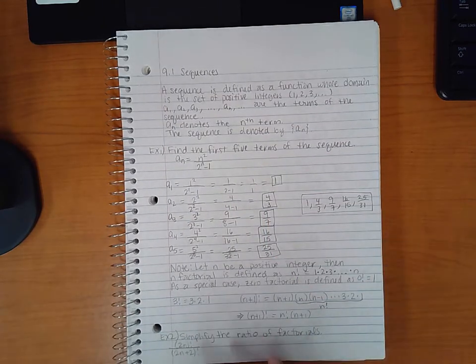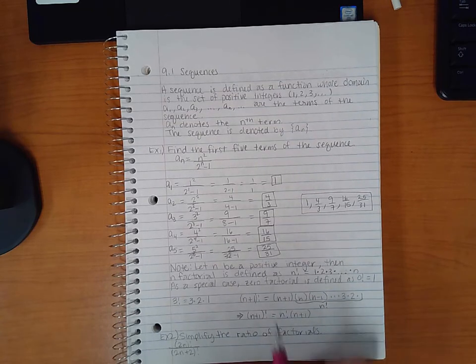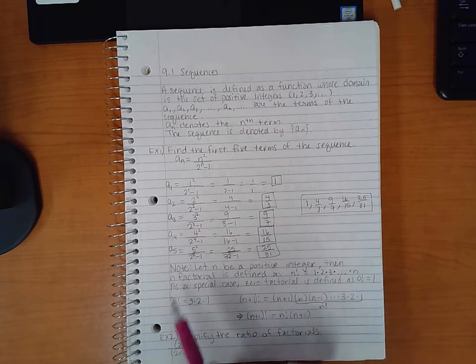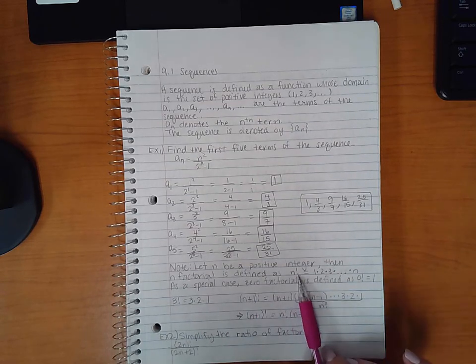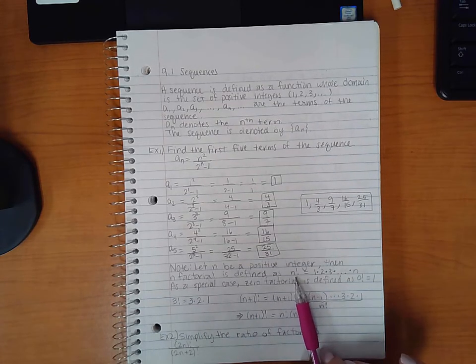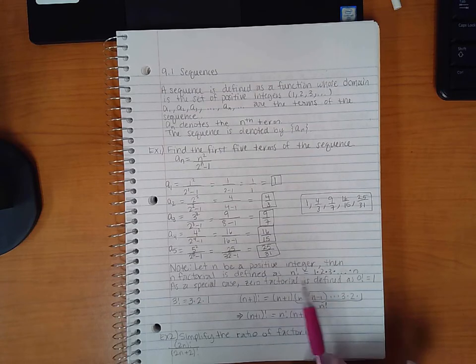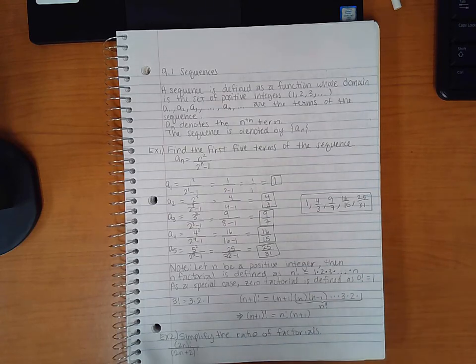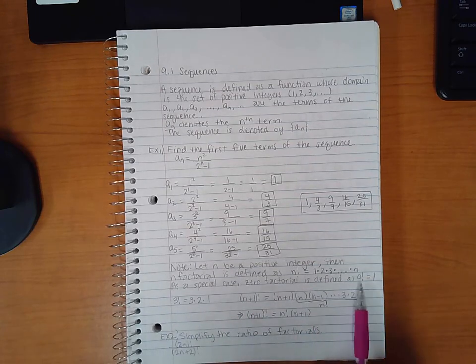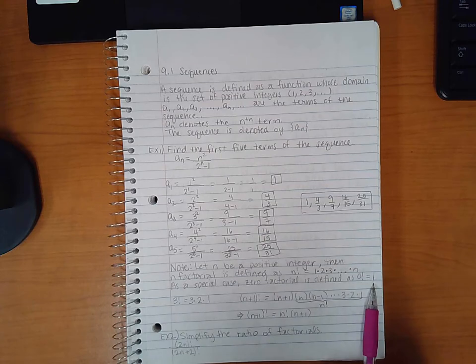So notice here it says let n be a positive integer. Then n factorial is defined as n with an exclamation point. That's how you denote n factorial. And that's equal to 1 times 2 times 3 all the way up until you get to n. So multiply all the integers until you get to n. As a special case though, 0 factorial is defined as 1. So if you see 0 factorial, it's just 1.